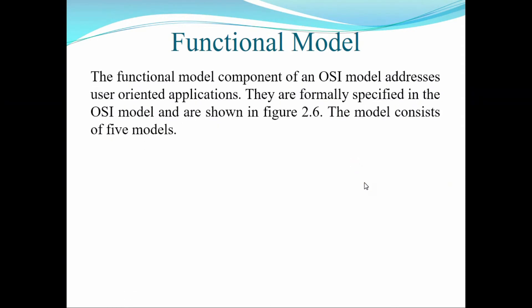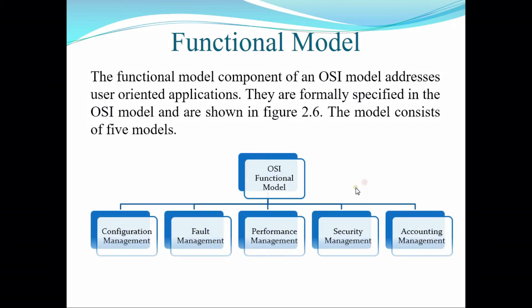Now, at last, the Functional Model. The Functional Model component of an OSI model addresses user-oriented applications. They are formally specified in the OSI model and are shown in Figure 2.6. The model consists of five parts: first, Configuration Management; second, Fault Management; third, Performance Management; fourth, Security Management; and at last, Accounting Management.